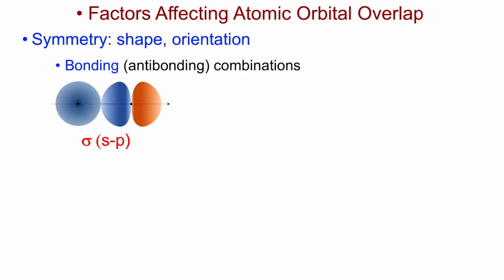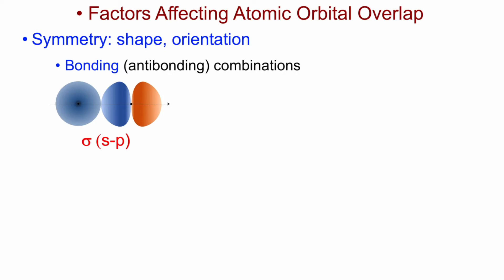For bonding, and conversely anti-bonding combinations, we must have the correct geometry to make bonding and anti-bonding overlaps possible. In the example shown, I'm showing the so-called sigma overlap of an s orbital and a p orbital. The orientation of the p orbital is such that we will get in-phase overlap between the two, yielding a bonding molecular orbital. I could either change the phase of the s, or switch the orientation of the p, to get the corresponding less stable anti-bonding combination.